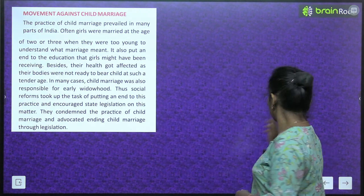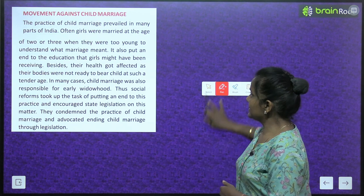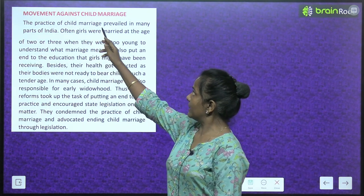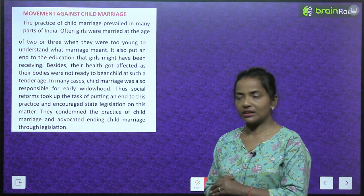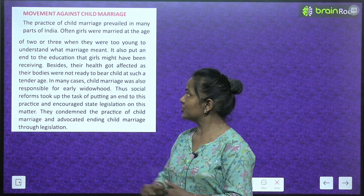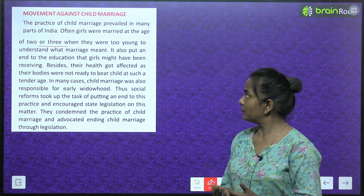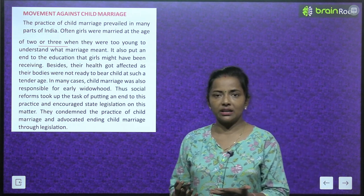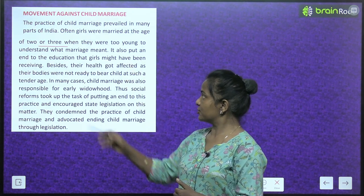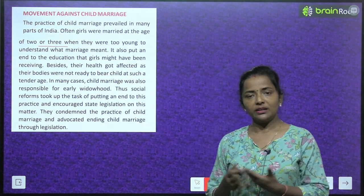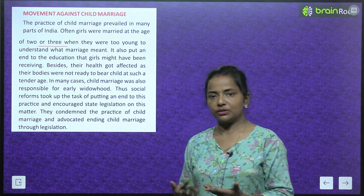Movement against child marriage: the practice of child marriage prevailed in many parts of India. Often girls were married at the age of two or three, when they were too young to understand what marriage meant. It also put an end to the education that the girls might have been receiving. Besides, their health got affected as their bodies were not ready to bear a child at such a tender age. In many cases, child marriage was also responsible for early widowhood.